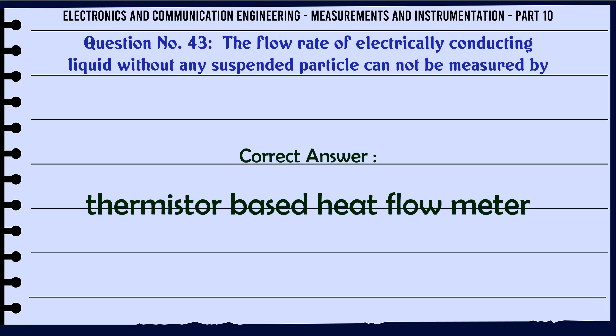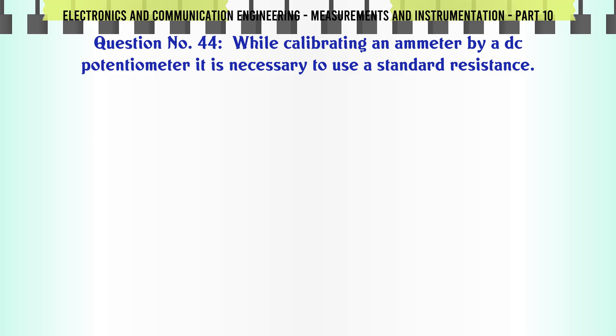While calibrating an ammeter by a DC potentiometer, it is necessary to use a standard resistance: A) true, B) false. The correct answer is true.